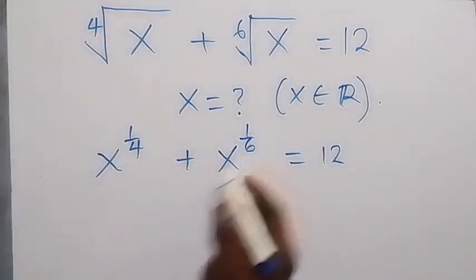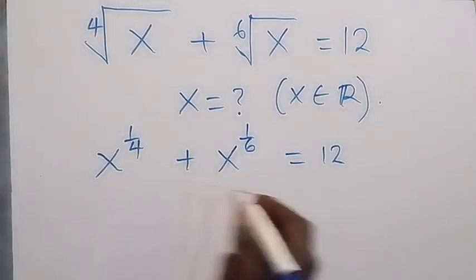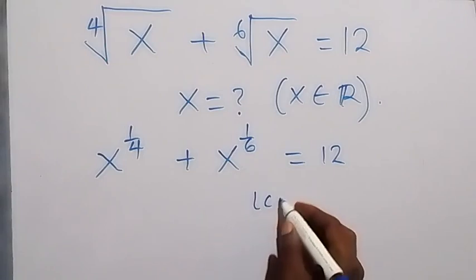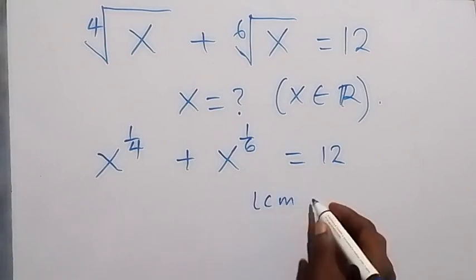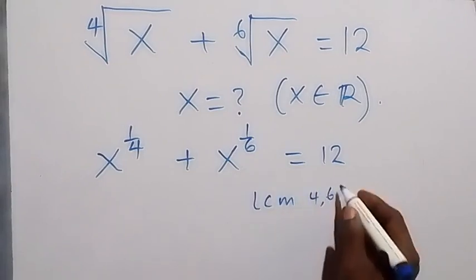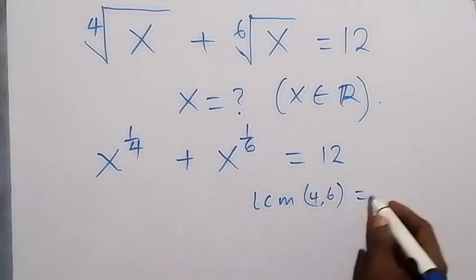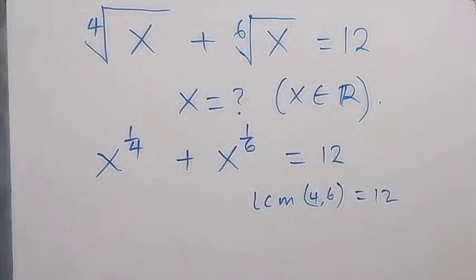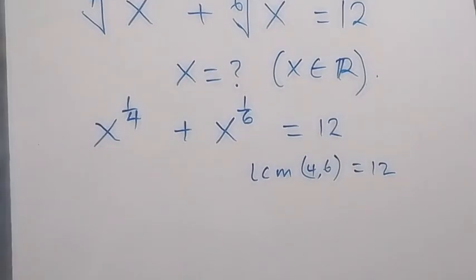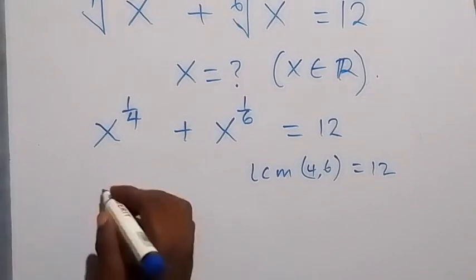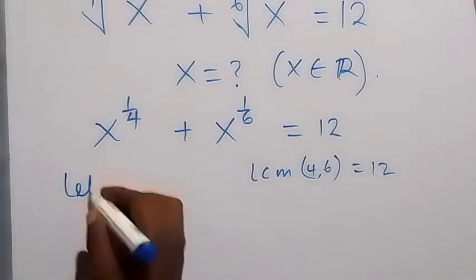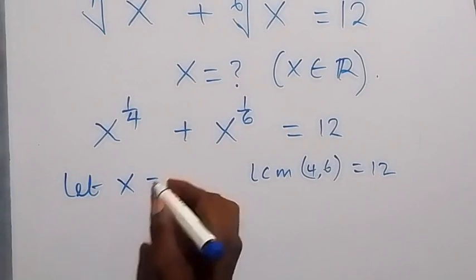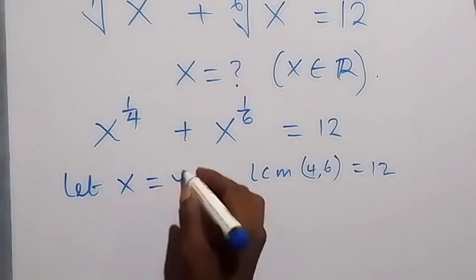When we look at the fractions in the powers, we can see that the LCM of 4 and 6 is equal to 12. So the LCM is 12. We can represent x with a letter raised to the power of 12 — let x equal y raised to the power of 12.